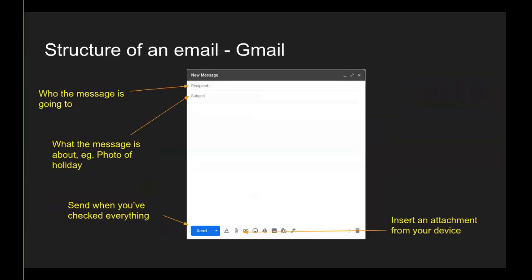So Gmail — this is from the Gmail web page when you make a new email, and you can see it's a lot different. Things are a little bit different the way around, but there are a lot of exactly the same things. The recipients are the person who the message is going to — you can actually have more than one person. What the message is about, and a message area underneath. You've also got a little paper clip where you can attach a picture or whatever from your device. If you've got a tablet or a phone, Gmail offers an app that does all of this anyway.